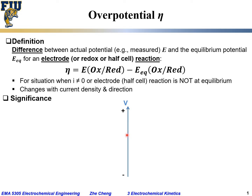Let's suppose this is our voltage or potential scale. The top is more positive, the bottom is more negative. Somewhere on this potential scale we have the equilibrium potential for the electrochemical half-cell reaction of interest — here we write OX for the oxidized species combined with N electrons to form the reduced species, RED. The arrow in both directions indicates equilibrium, meaning the forward reaction rate equals the backward reaction rate and the system concentration does not change with time. This is the equilibrium potential for the electrode or half-cell reaction.